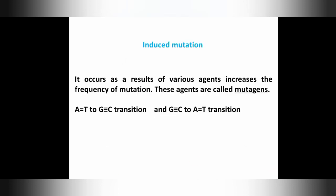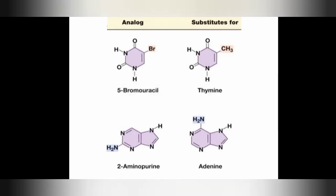Next is induced mutation. Unlike spontaneous mutation where tautomeric shift occurs naturally, induced mutation occurs when some factor or inducer is active. Induced mutation is a mutation that occurs as a result of various agents — called mutagens — which increase the frequency of mutation, causing A-T to G-C transitions and G-C to A-T transitions.